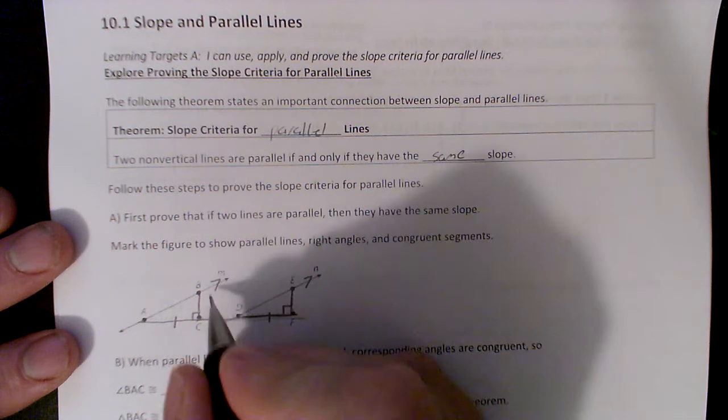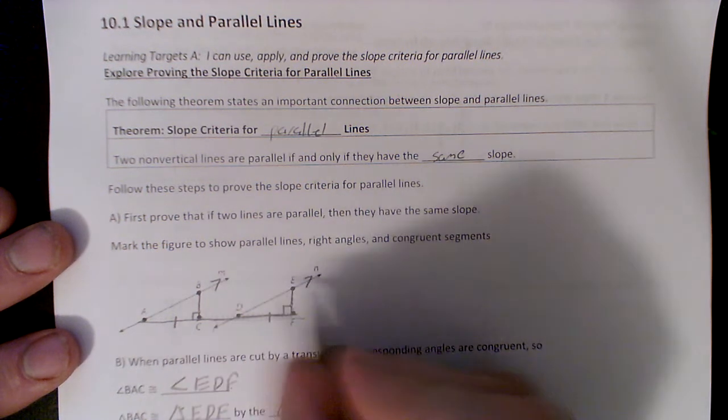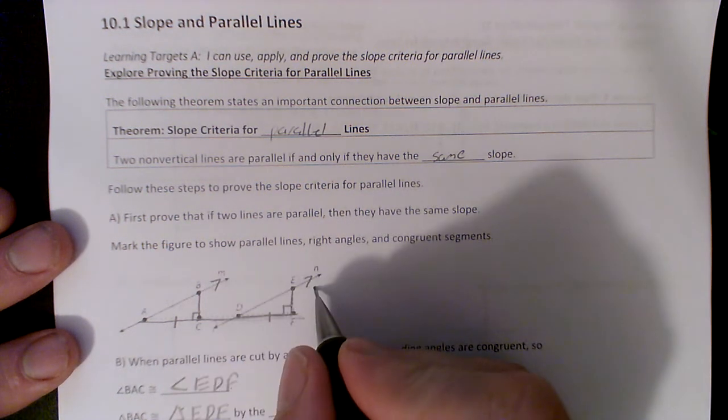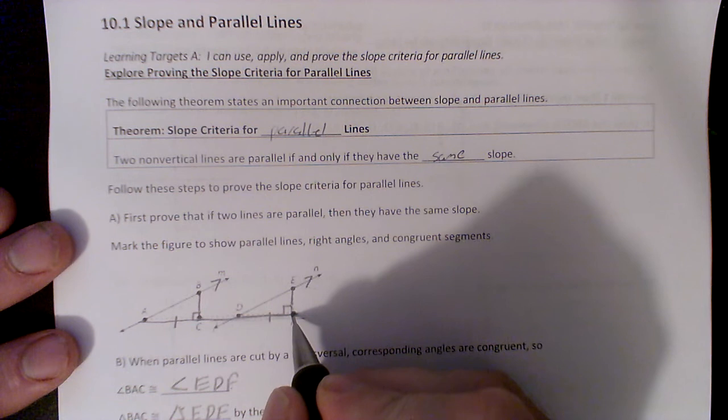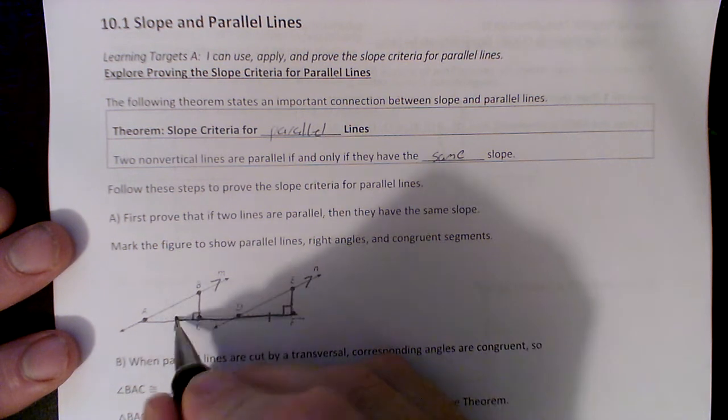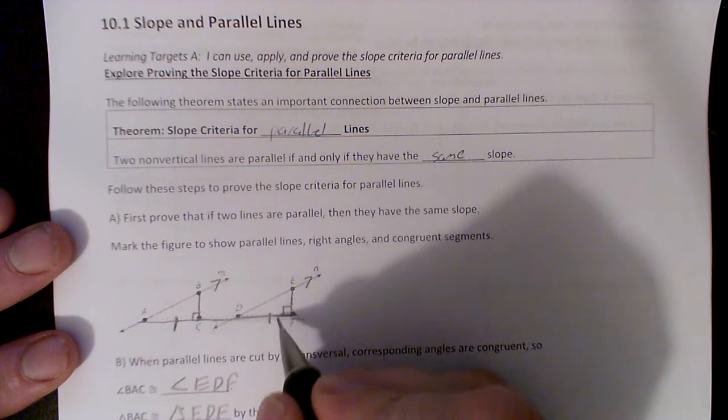First, prove that if two lines are parallel, so we have two lines parallel here. If these marks didn't come out, you put them on there. Then they have the same slope. Mark the figure to show parallel lines and right angles. We have a right angle here, and then we've got these two sides congruent.